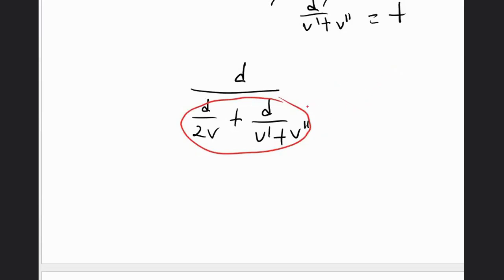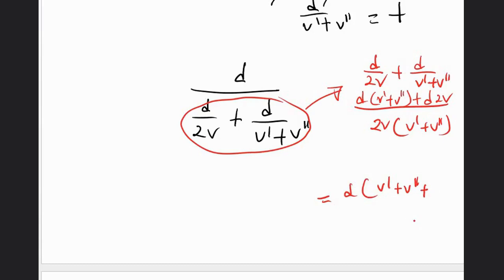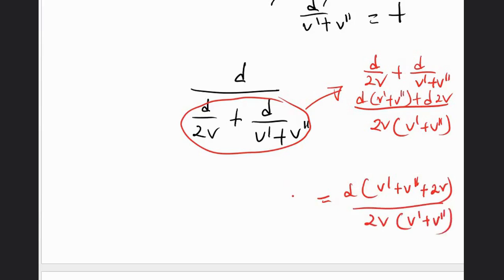Let's simplify this separately. We have to add D over 2V plus D over (V' + V''). Taking the common denominator 2V(V' + V'') — multiply through — we get D(V' + V'') plus D times 2V in the numerator. So the total time simplifies to D(V' + V'' + 2V) over 2V(V' + V'').